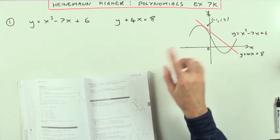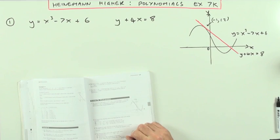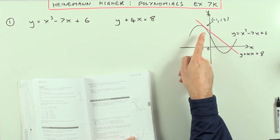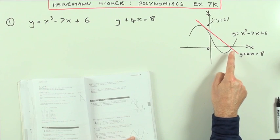Heinemann, Rigek. Chapter 7 on Polynomials, the mixed exercise 7K at the end. There's a tangent to a curve. Where does this tangent cut the curve again?